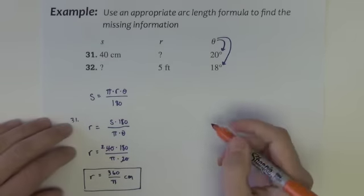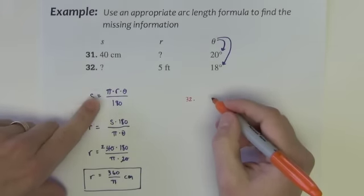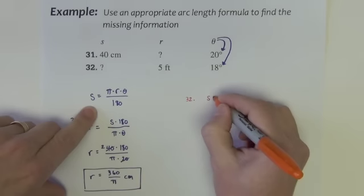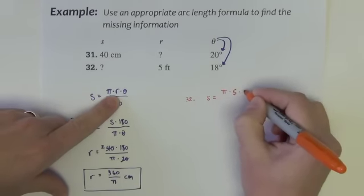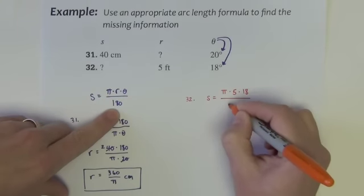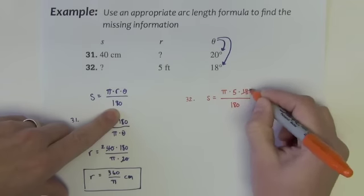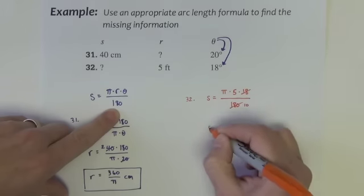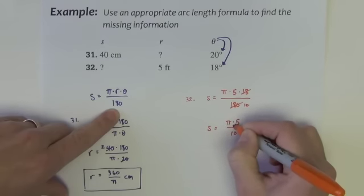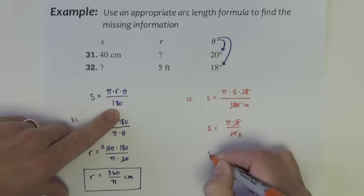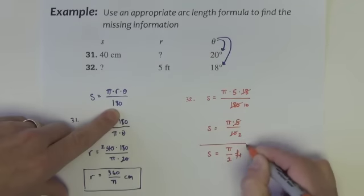For example 32, we're looking for the arc length, so we use the formula directly: S equals pi times R times theta over 180. With R equal to 5 and theta equal to 18: 18 goes into 180 ten times, leaving pi times 5 over 10. Then 5 goes into 10 two times, so the arc length S equals pi over 2 feet.